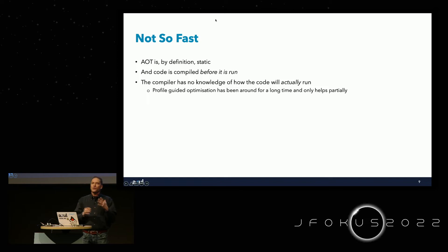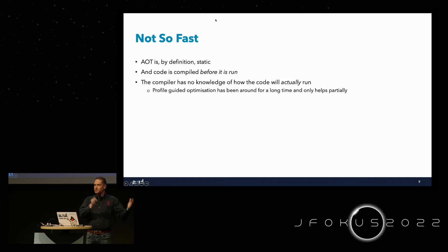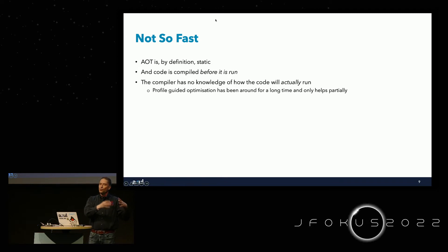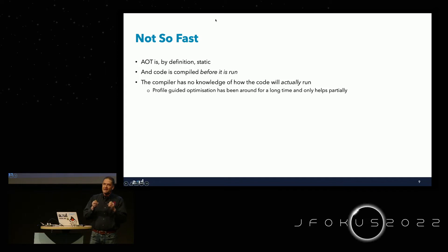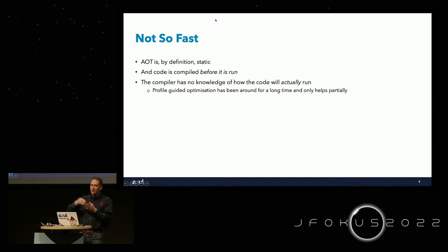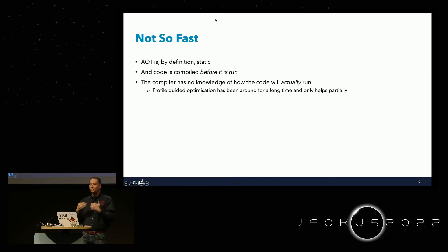There is an approach to partially solve that problem called profile-guided optimization (PGO), which has existed since the beginning of static compilation. You compile your code with a static compiler, run it while profiling, then feed that profile back into the compiler to recompile with some runtime knowledge. However, that profile is still static — it only reflects whichever run of the application you used to generate it. If your application's usage changes, you have no ability to adapt. It gets some runtime information, but it's still fundamentally static.